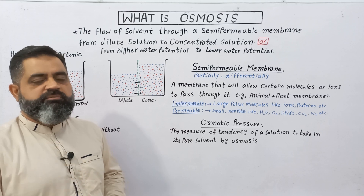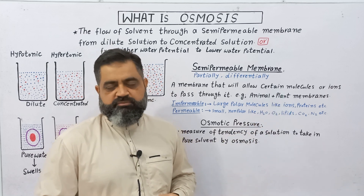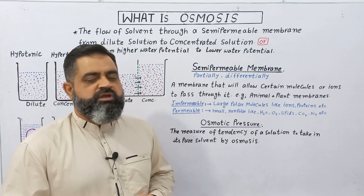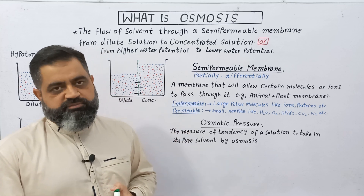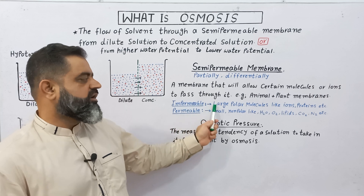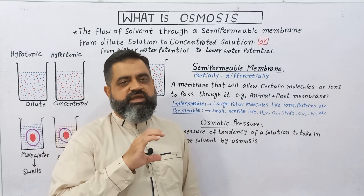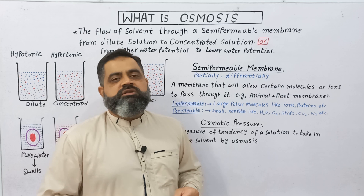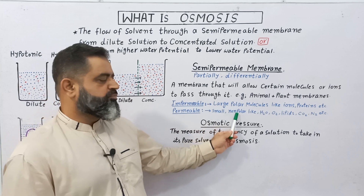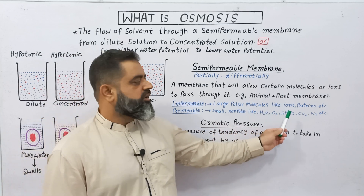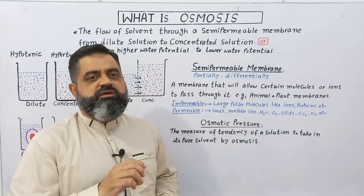All animal cell and plant cell membranes are usually semi-permeable membranes. Cell membrane, plasma membrane, and nuclear membrane are all types of semi-permeable membranes. These membranes are impermeable to large polar molecules like ions, proteins, etc. While small non-polar molecules like water, oxygen, lipids, CO₂, and nitrogen can easily pass through the semi-permeable membrane.